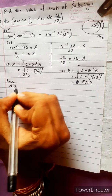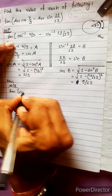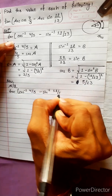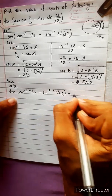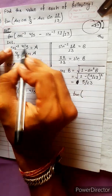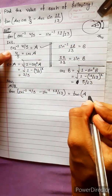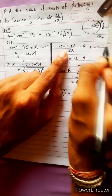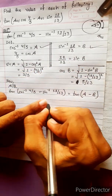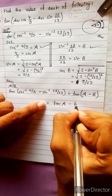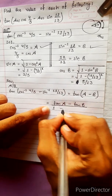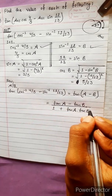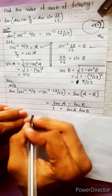According to the question, it is cos inverse 4 by 5 minus sin inverse 12 by 13. Cos inverse 4 by 5 is a and sin inverse 12 by 13 is b, so this becomes tan(a minus b). We know the formula: tan(a minus b) equals tan a minus tan b divided by 1 plus tan a times tan b.